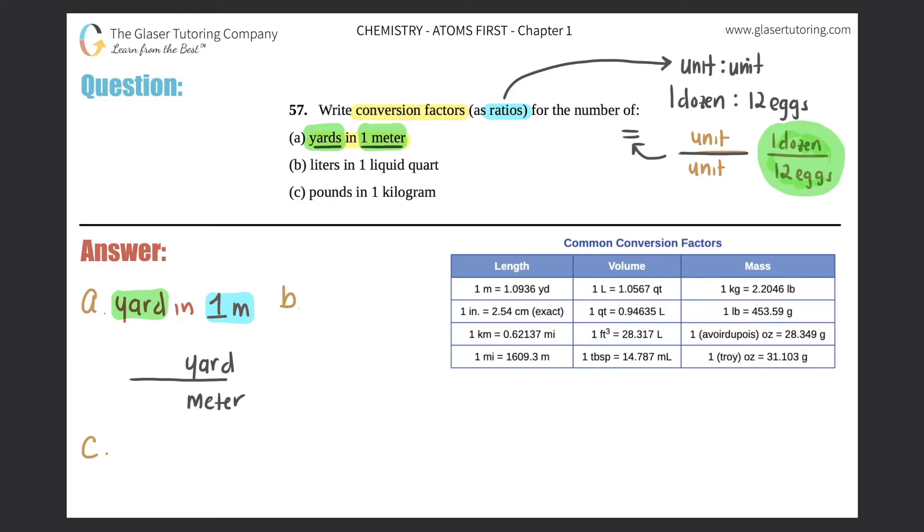That's when we go to our handy-dandy common conversion factors, and we have to find out how many yards equals how many meters. So in this case here, I'm looking for it in the length section because yards and meters are lengths. And I see here one meter equals 1.0936 yards. And they're already telling me how many yards are in one meter: one meter is 1.0936 yards.